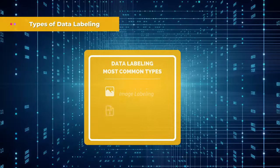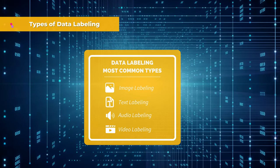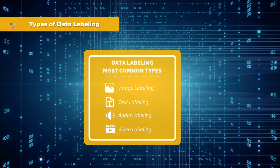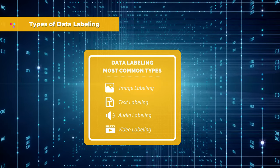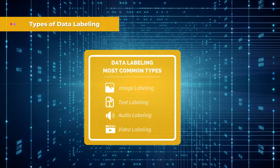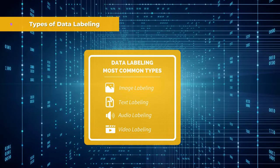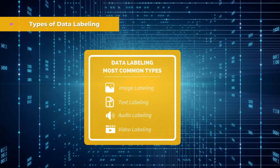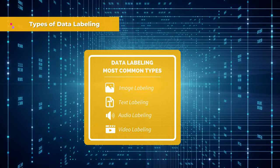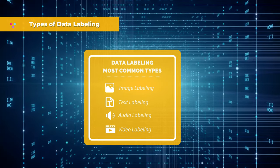There are several types of data labeling, including image labeling, text labeling, audio labeling, and video labeling. Image labeling involves adding labels to images, such as identifying objects, people, or landmarks. Text labeling involves adding metadata to text, such as sentiment analysis or identifying named entities.